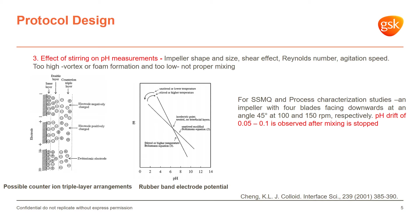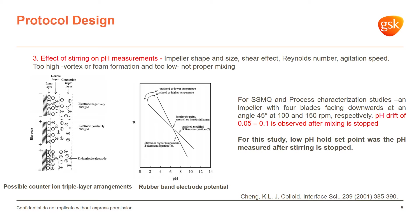We were able to control the pH drift within 0.05 to 0.1 unit of the target pH. In this study, the low pH set point is the pH measured after the stirring has stopped.